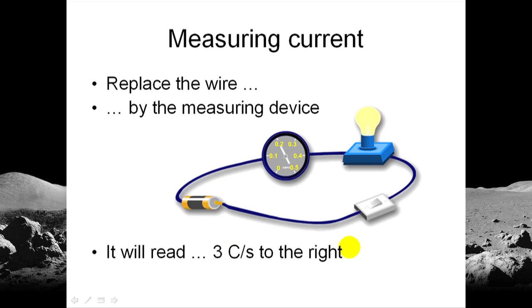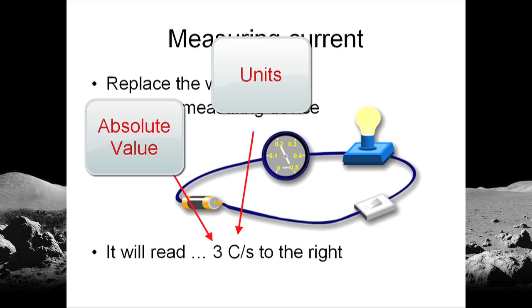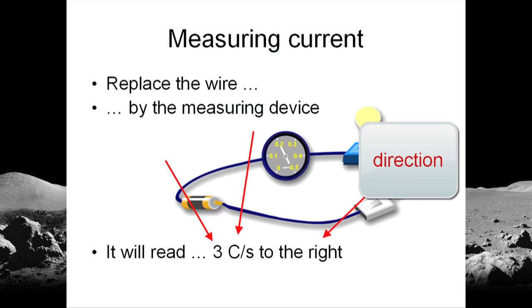Observe that that current's value has three components: the value itself, 3, absolute value; the unit, coulombs per second—it could be milliamps, as when we analyze amplifiers, or micro coulombs per second, or even less; and to the right, to the left, north, south—the direction is as important as the other two components.